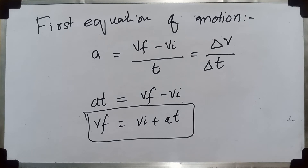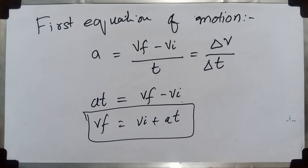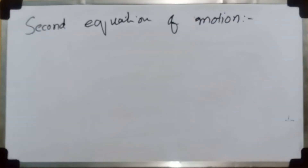This is our first equation of motion, derived through manipulation of the acceleration formula. In problems where we have to find any unknown and we are given the rest of the values, we can do so using this equation. Now let's look at the second equation of motion.